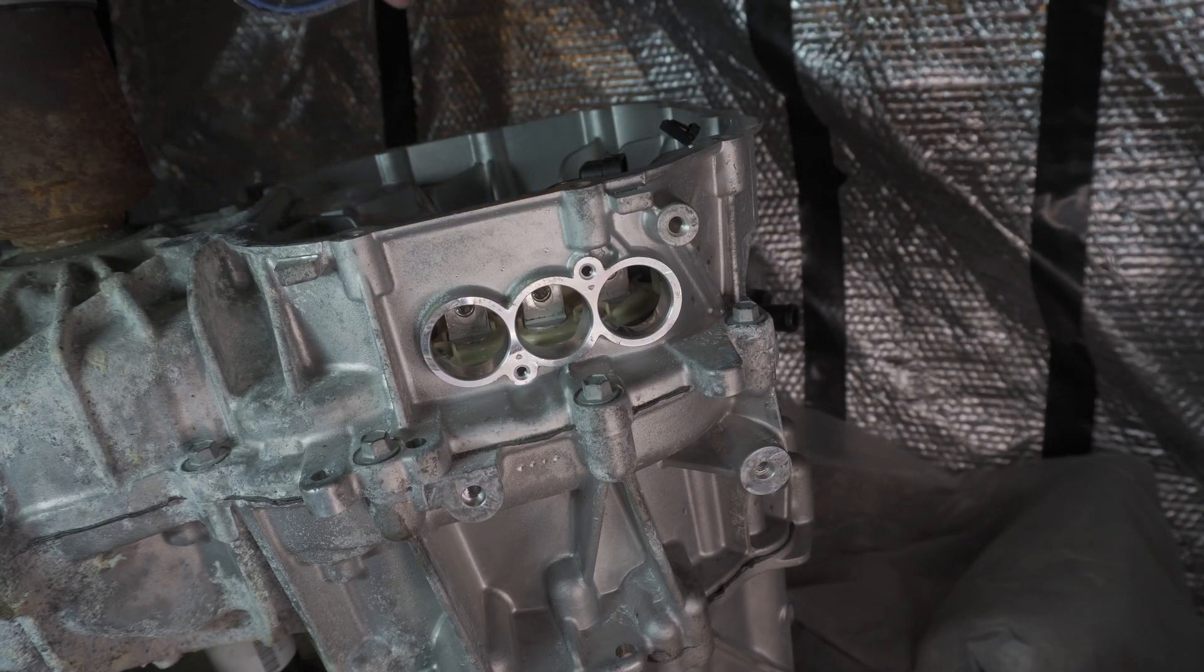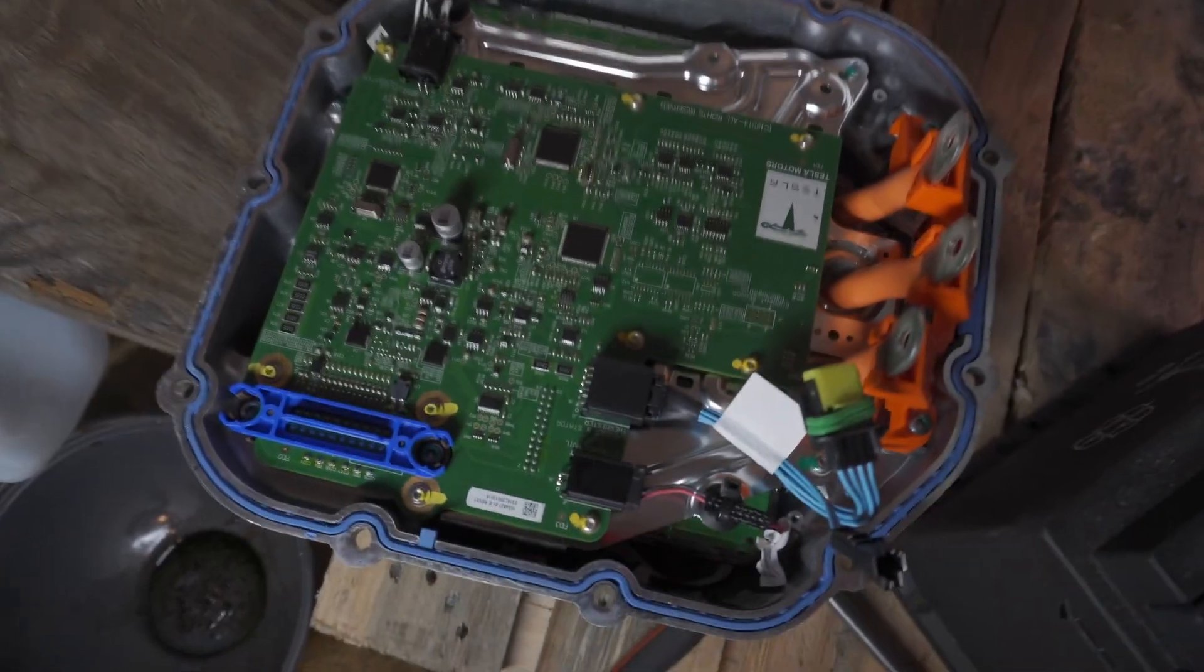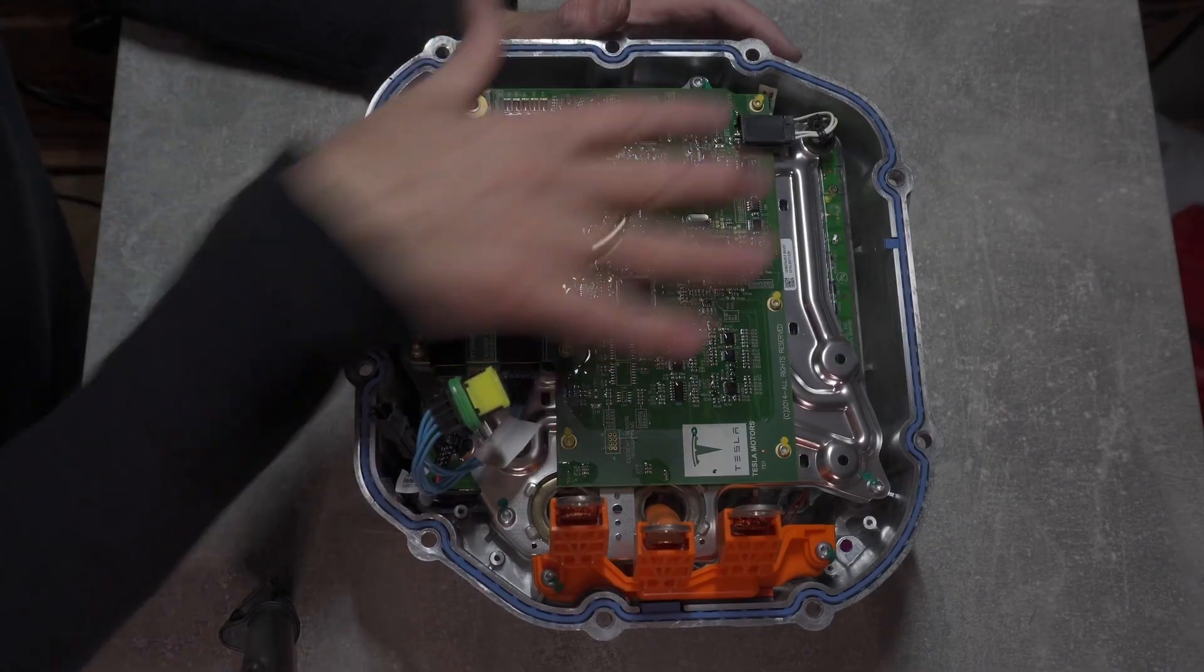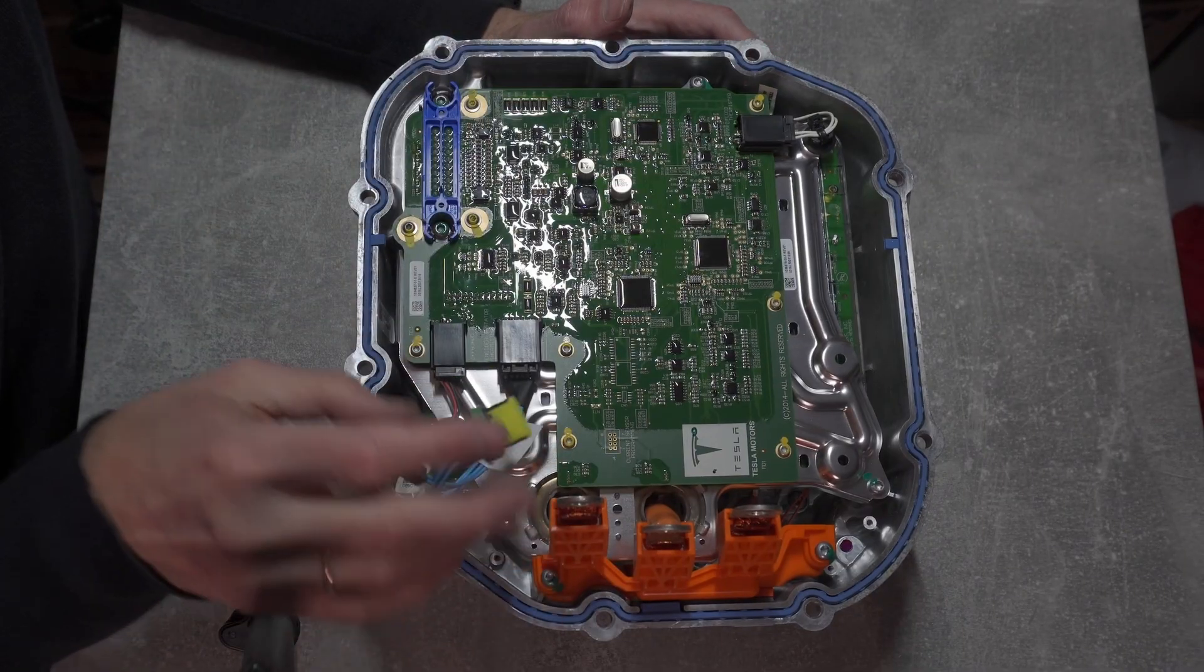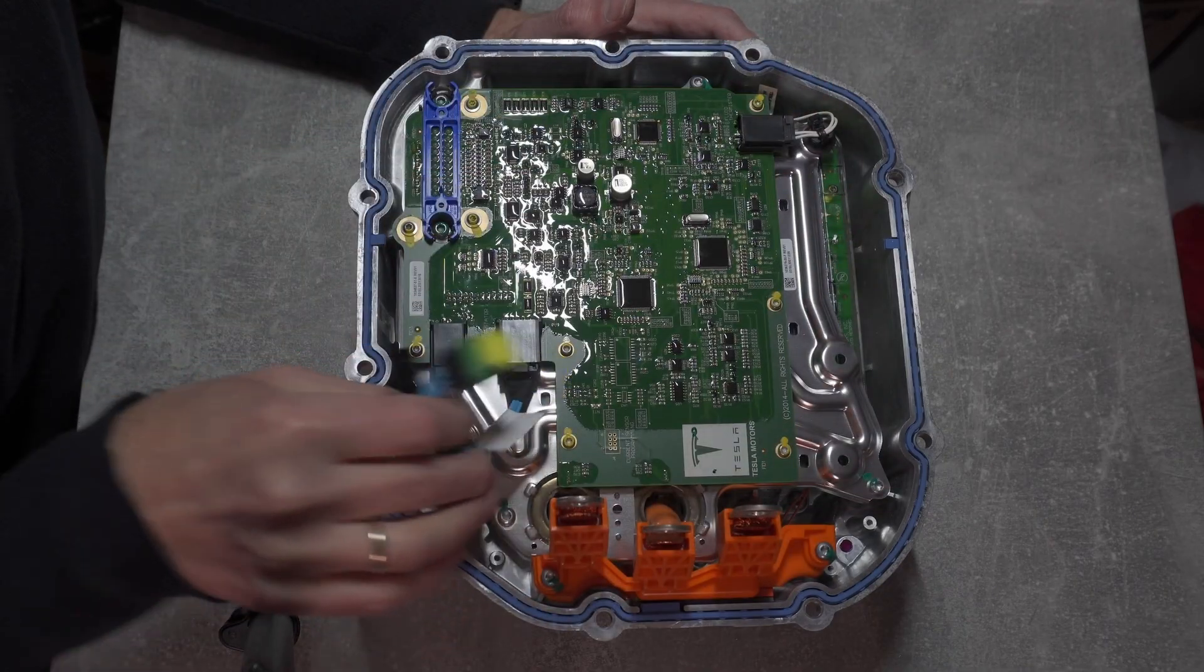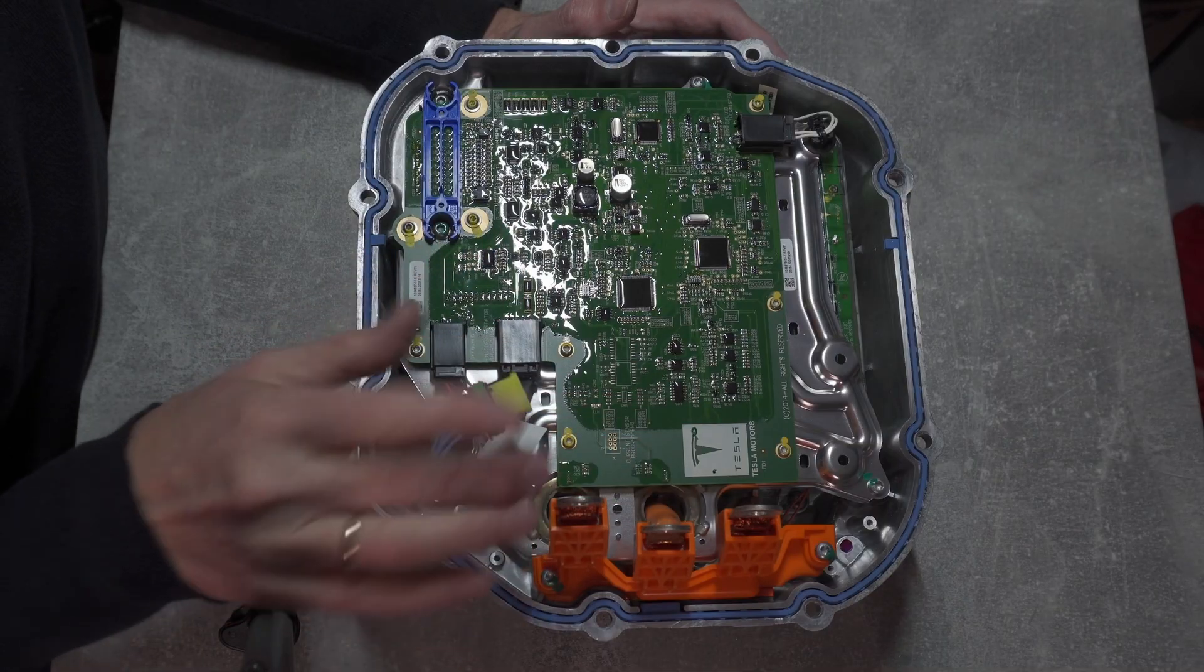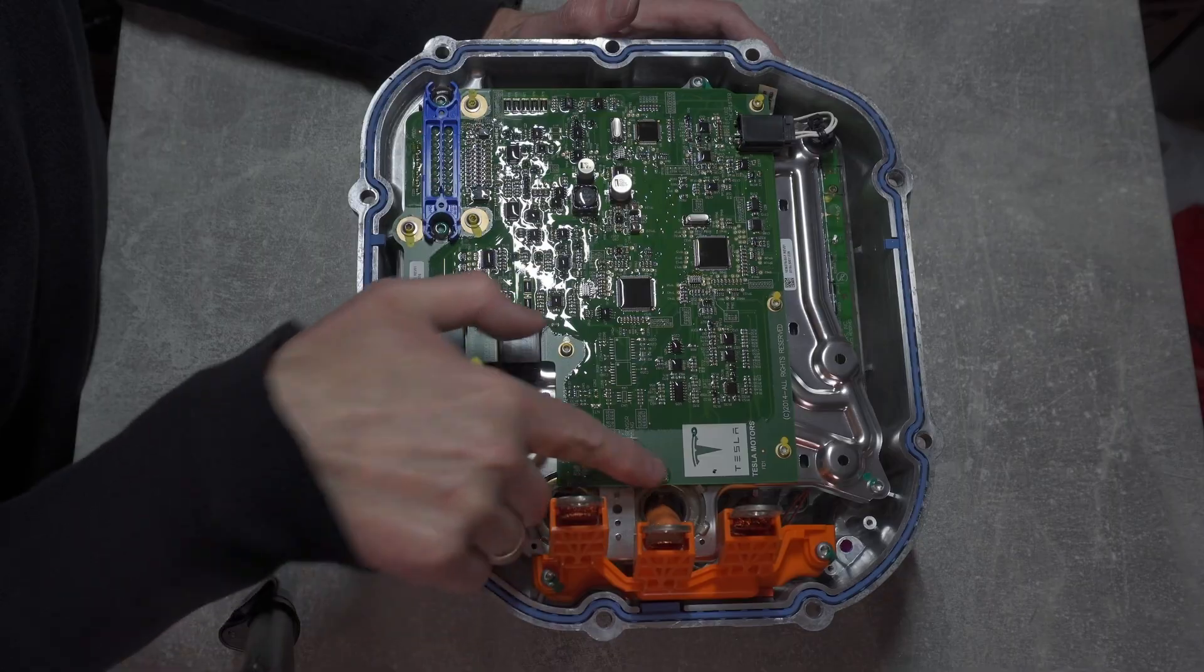With the inverter removed, I couldn't help but admire the incredible level of technology Tesla had even in 2013 when this car was built. Now I can focus on removing the top board from here. I need to remove the whole bottom plate and the board together because the bottom plate has current sensors embedded in the plate and they are soldered straight to the board.